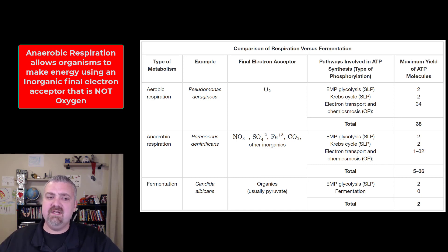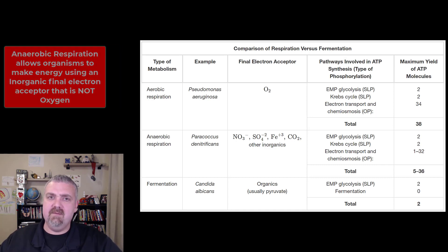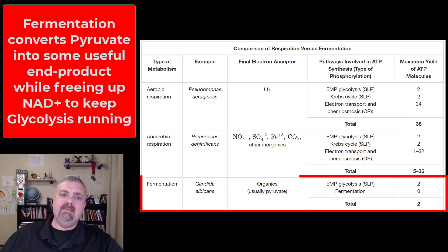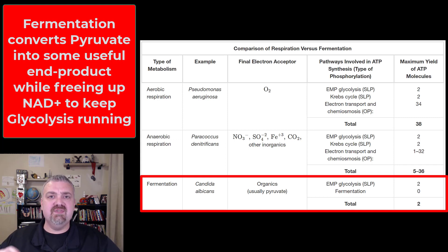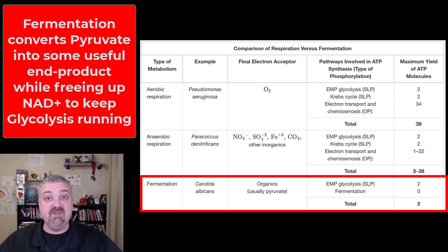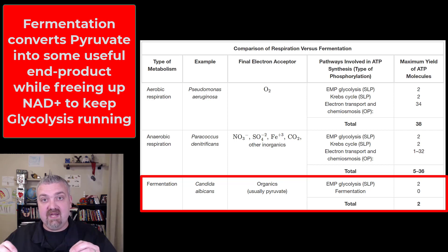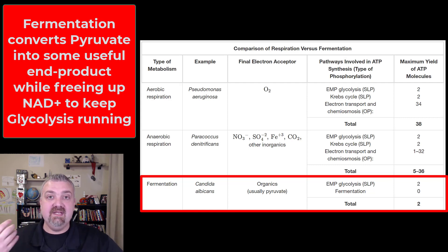Let's focus in on fermentation. Fermentation is when you use an organic final electron acceptor — it's usually going to be pyruvate. So where would you get pyruvate? From glycolysis. These fermenters are still going to use anaerobic glycolysis. The fermentation process takes that pyruvate and changes it, but doesn't actually generate any more energy.